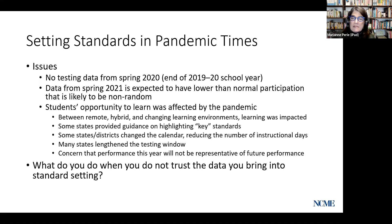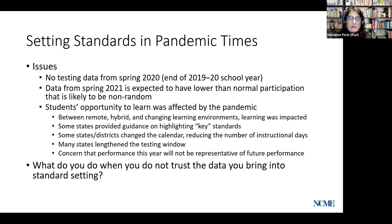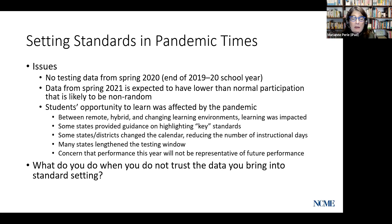States and districts have also changed their academic calendars — starting later, ending earlier, or shortening breaks. For states moving forward with testing, some have lengthened their testing windows or started earlier than normal, further changing the opportunity to learn. All of this raises the question: how representative is 2021 performance of future performance? When setting standards, we need scores to be comparable across years.